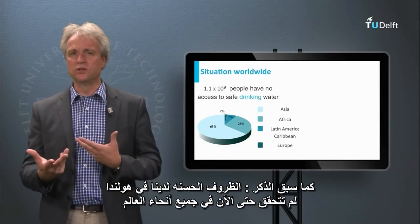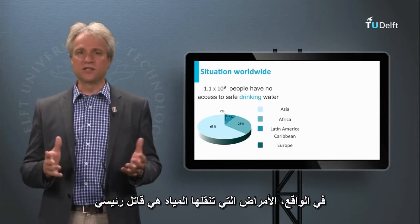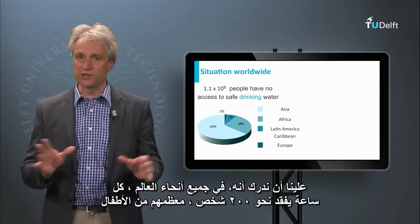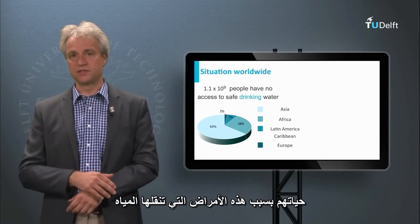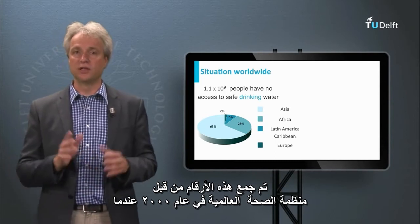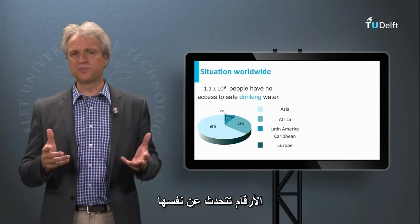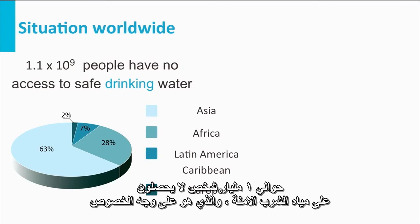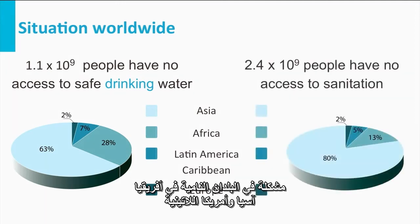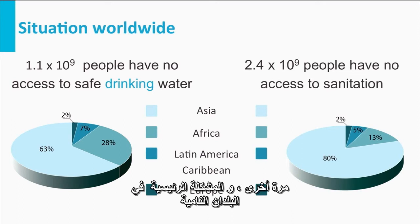As already mentioned, the fortunate condition we have in the Netherlands is not yet achieved worldwide. In fact, waterborne diseases are a major killer. We have to realize that worldwide, every hour, about 200 people — mainly children — lose their lives because of these waterborne diseases. This makes about 200 million people per year. These numbers were collected by the World Health Organization in the year 2000, when the Millennium Development Goals, or MDG, were approved. About 1 billion people do not have access to safe drinking water, which is particularly a problem in developing countries in Africa, Asia and Latin America. And note that about 2.4 billion people do not have access to sanitation, and the major hurdles have to be taken in developing countries.